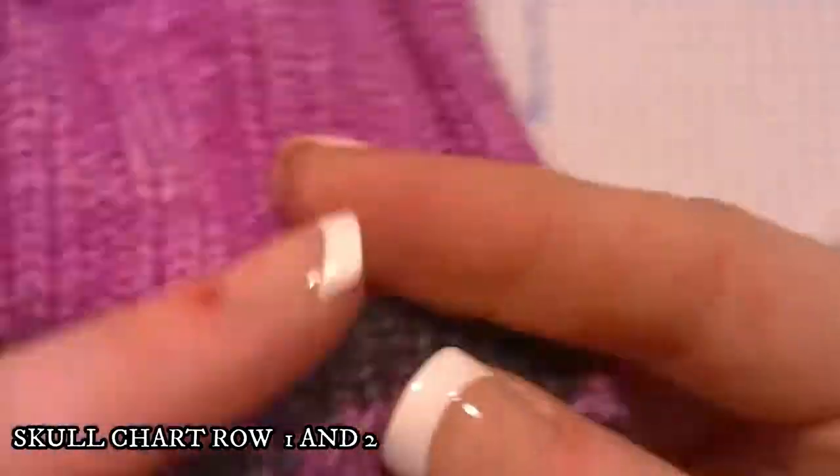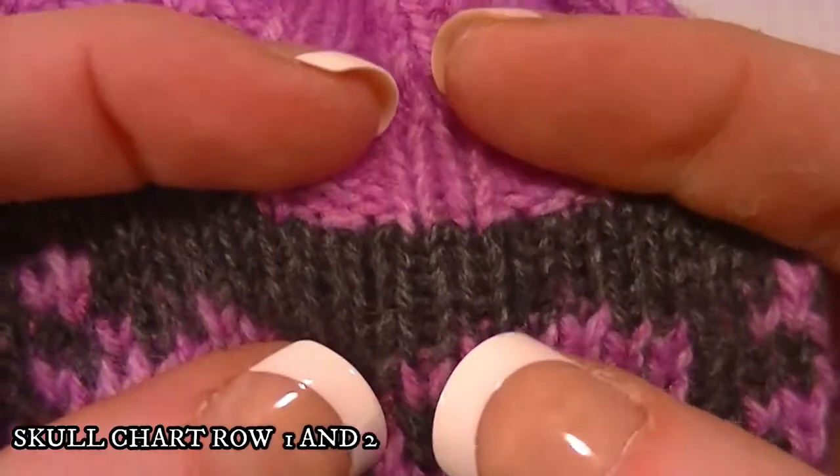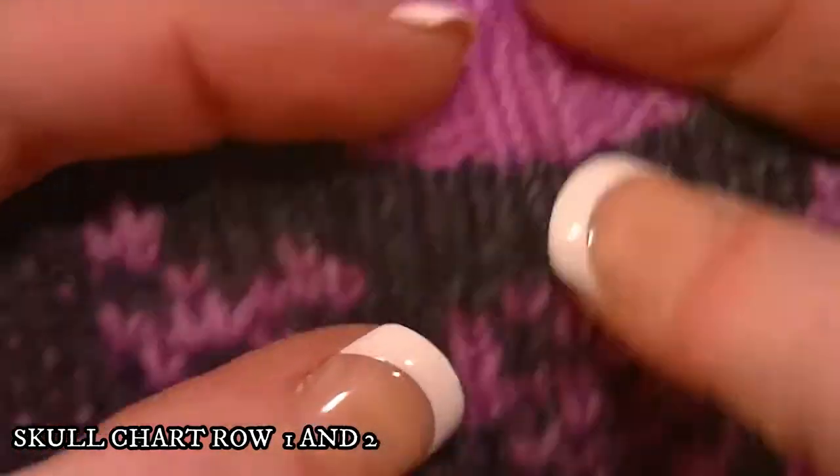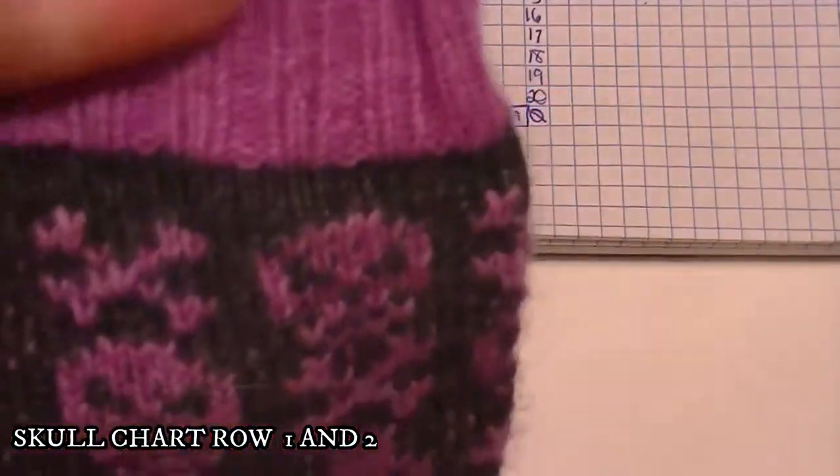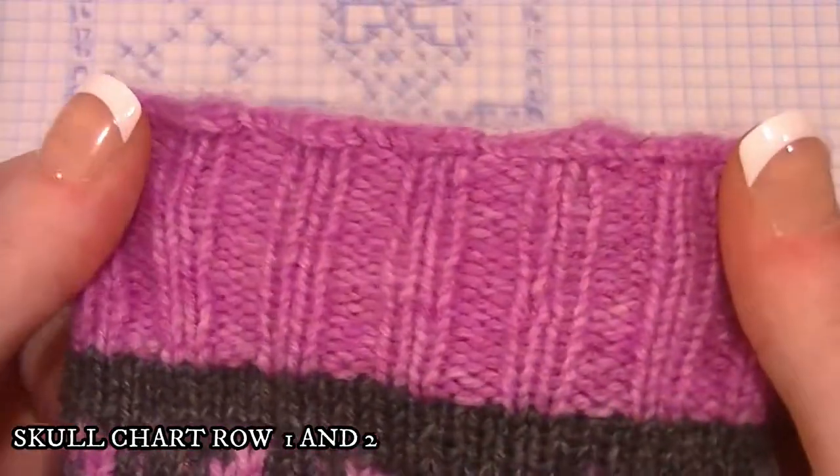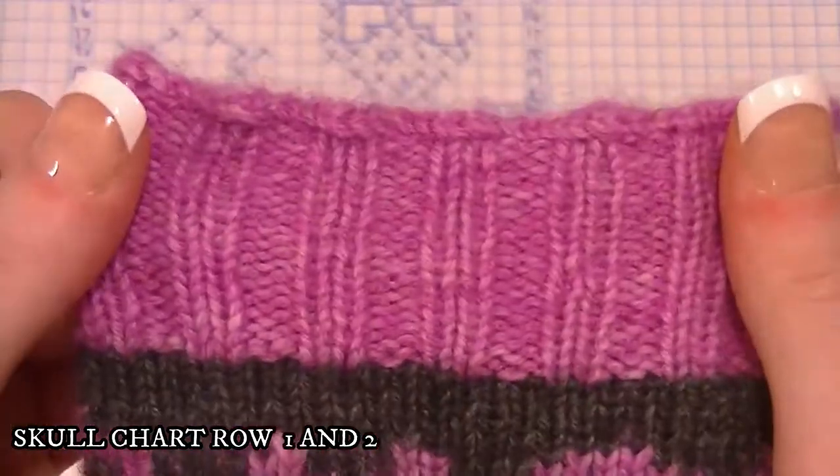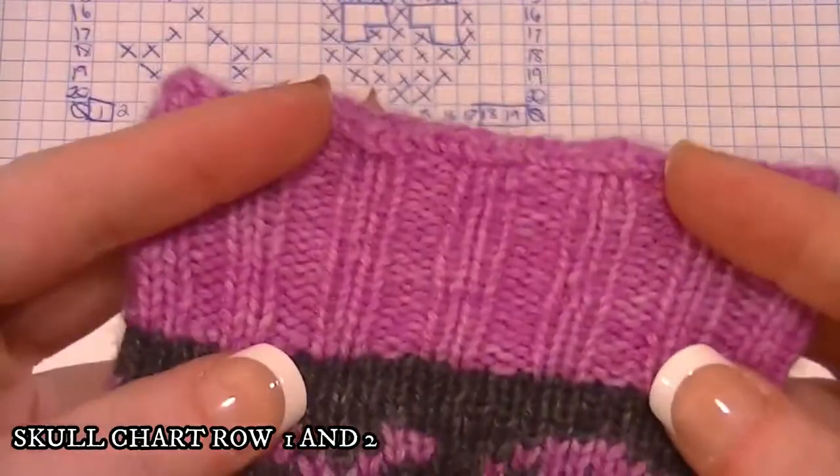Then you do 1, 2, 3, 4, 5 rows of your background color, which on this is the pink, and then we'll do our two-by-two ribbing for the top. I'll show you how to do that when we get there.